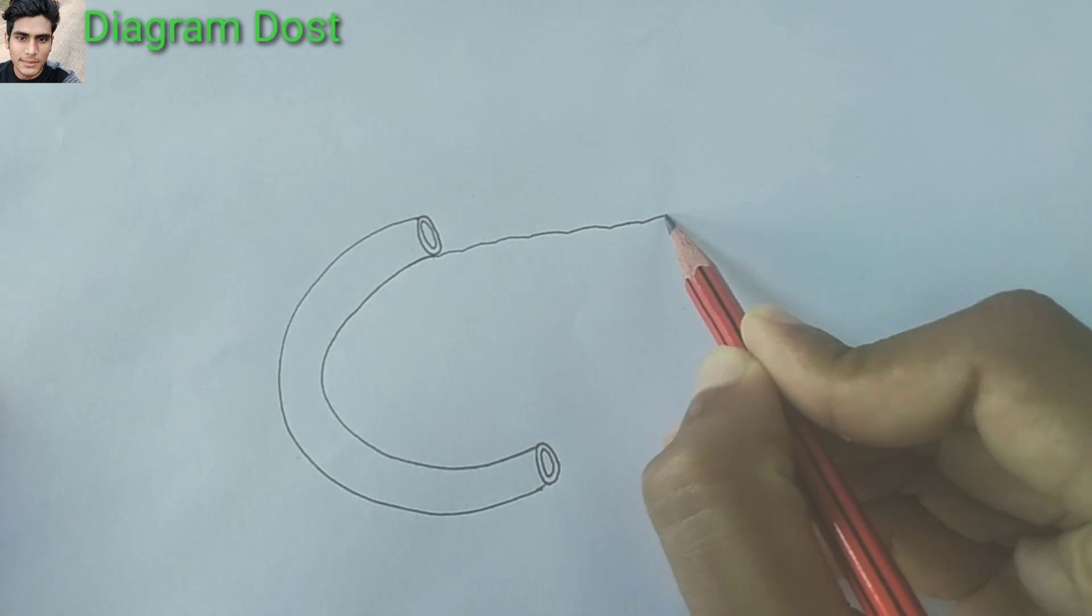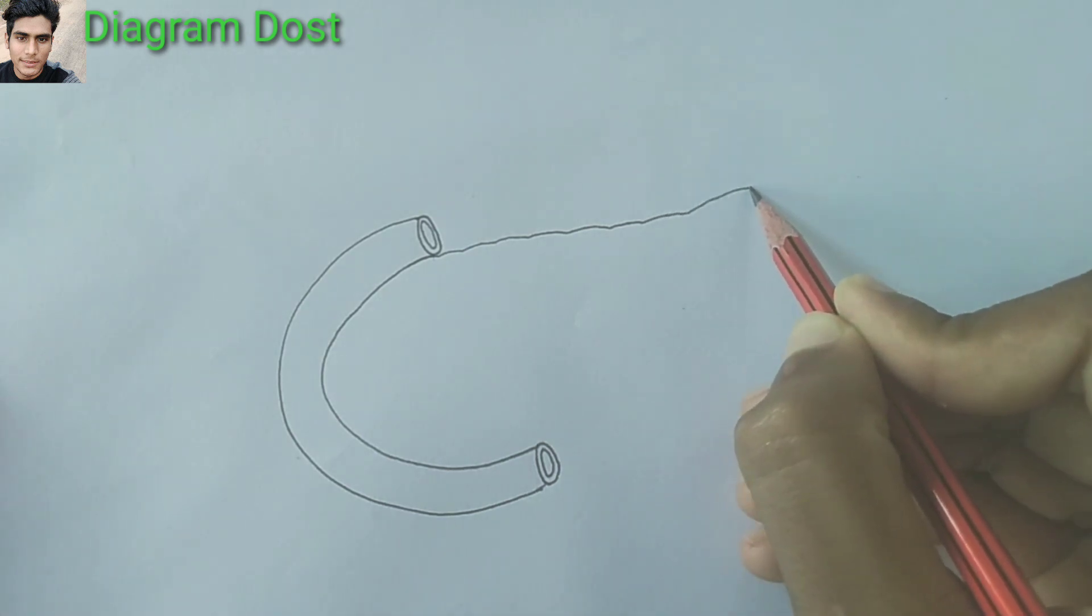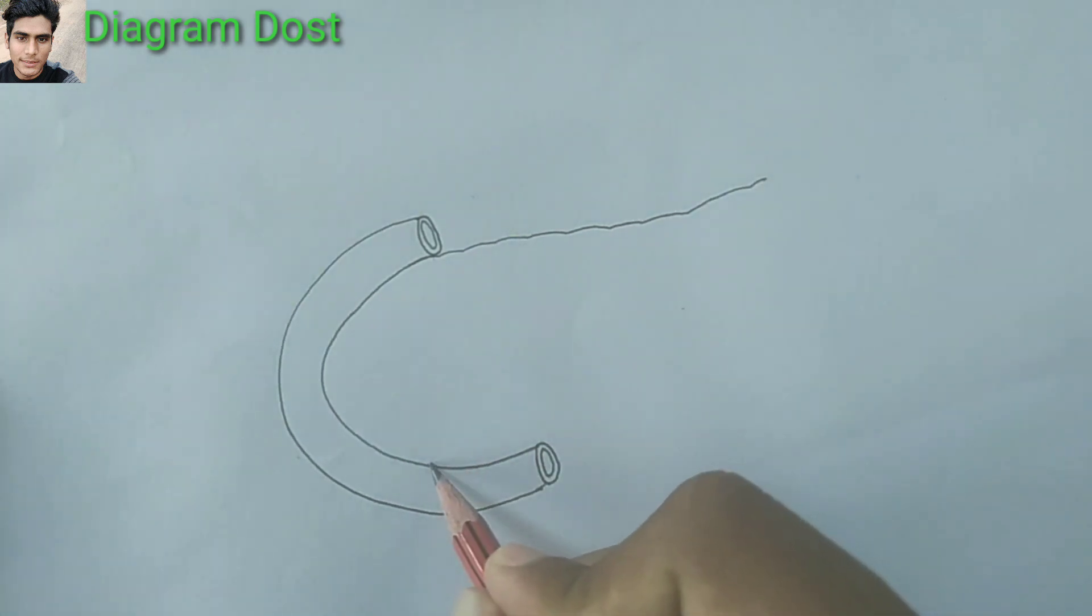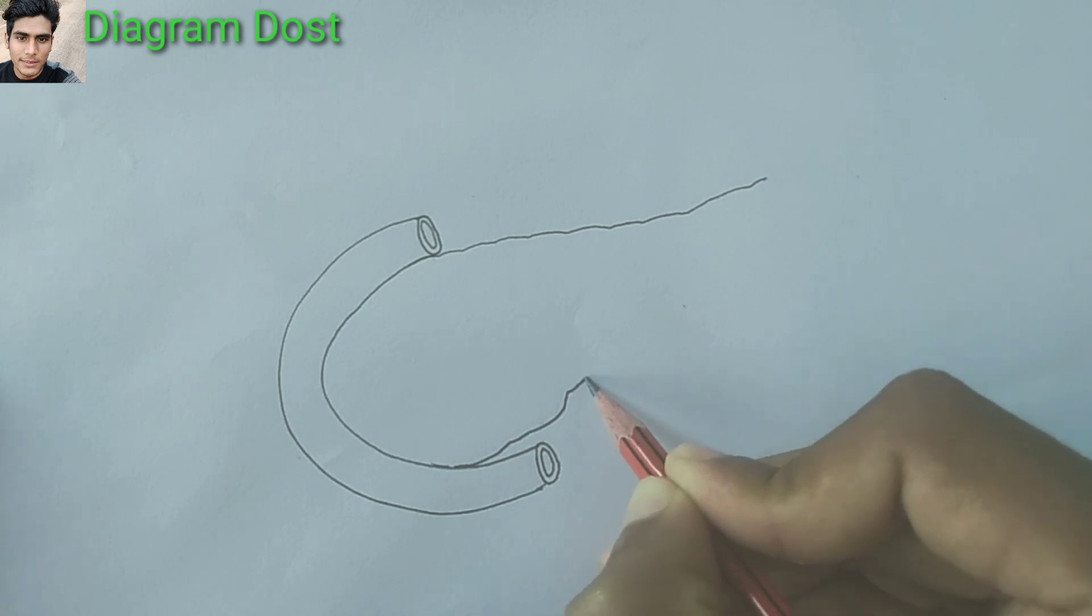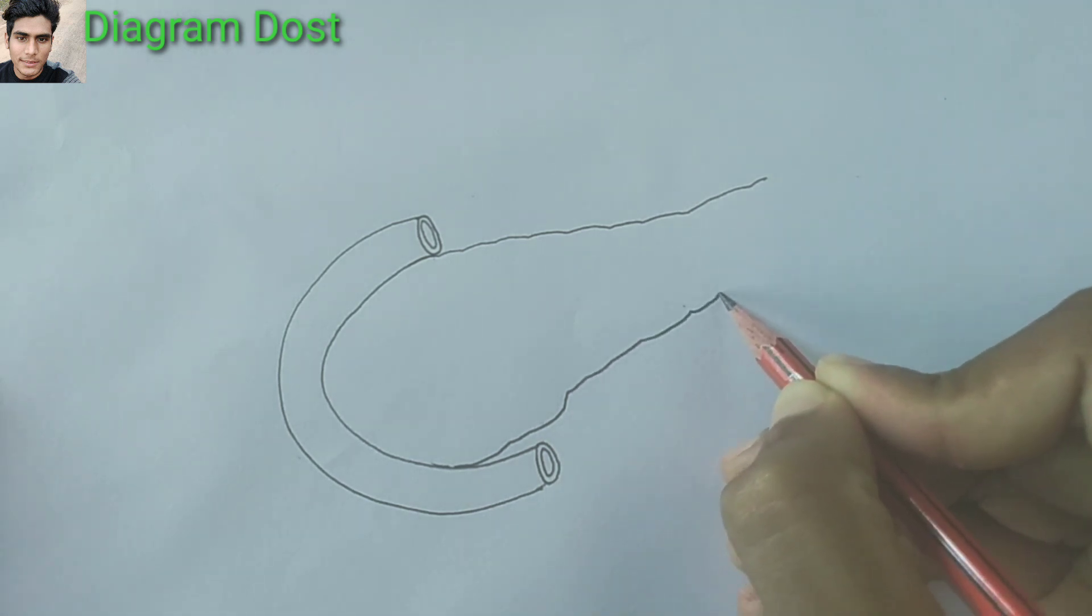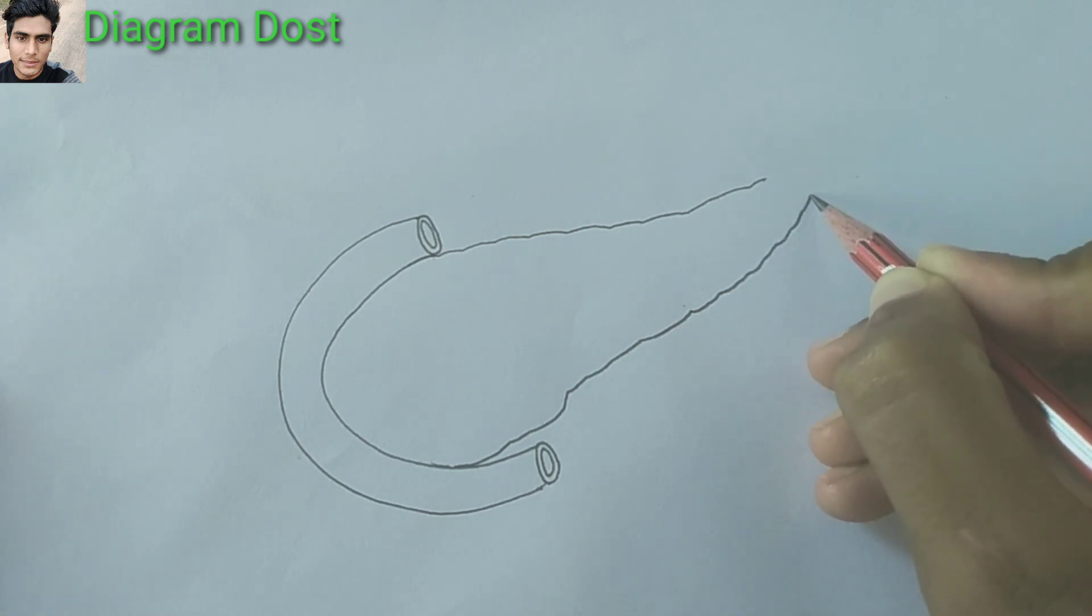Take an irregular line. See how I am making it. Keep going, keep going. Now join these both lines together.